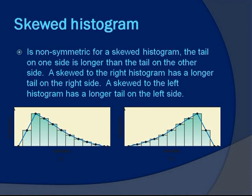A skewed to the right histogram has a longer tail on the right side. A skewed to the left histogram has a longer tail on the left side.